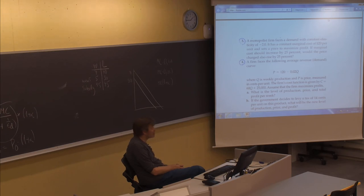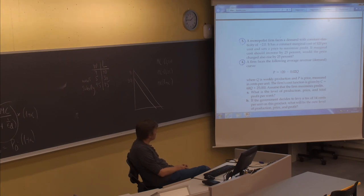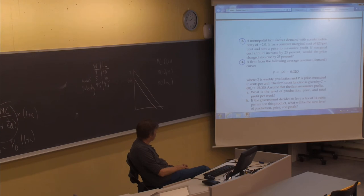We move on to exercise four. A firm faces the following average revenue or demand curve — I am much more comfortable with 'demand' as the concept — given as P equals 120 minus 0.02Q, where Q is weekly production and P is price measured in cents per unit. The firm's cost function is given by C equals 60Q plus 25,000. Assume that the firm maximizes profits. This is a classical monopoly exercise.